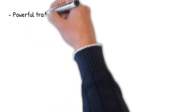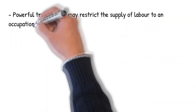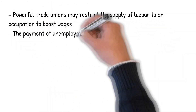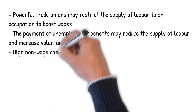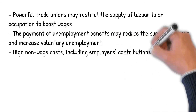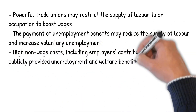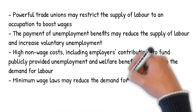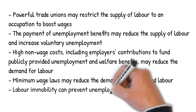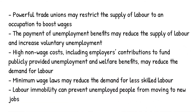The labor market is sometimes far from an ideal market. Labor market failures and imperfections may restrict employment opportunities. Powerful trade unions may restrict the supply of labor to an occupation to boost wages. The payment of unemployment benefits may reduce the supply of labor and increase voluntary unemployment. High non-wage costs, including employers' contributions to fund publicly provided unemployment and welfare benefits, may reduce the demand for labor. Minimum wage laws may reduce the demand for less-skilled labor, and labor immobility can prevent unemployed people from moving to new jobs.